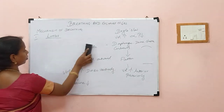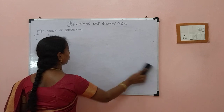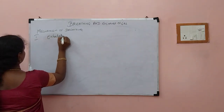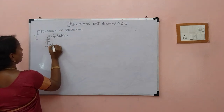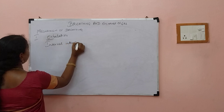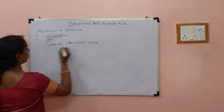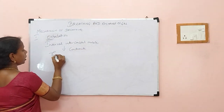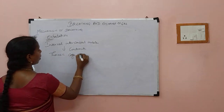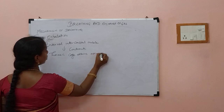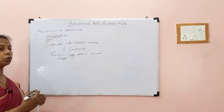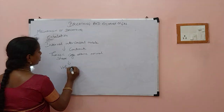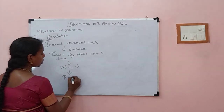Now we will see exhalation — opposite to inhalation. The internal intercostal muscle participates in exhalation. When the internal intercostal muscle contracts, the thoracic cage attains its normal shape, going back to the original condition. As a result, volume decreases, and when volume decreases, pressure increases.